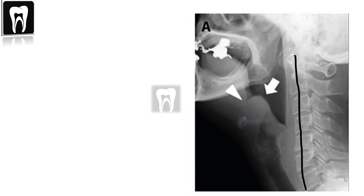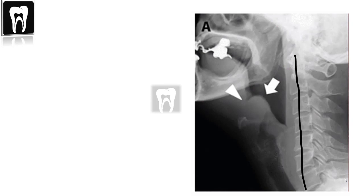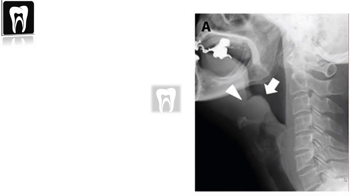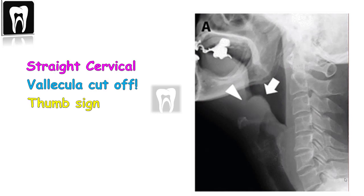In this X-ray, the C-shaped cervical lordosis curve is lost — the spine is straight. The airway is no longer continuing down into the pharynx; this is called the vallecula cutoff sign. The epiglottis appears like a thumb, which is called the thumb sign. All these findings indicate epiglottitis, which is an airway emergency.